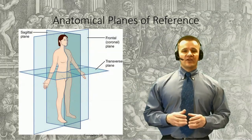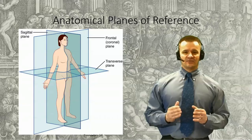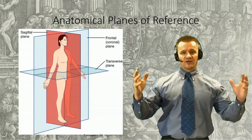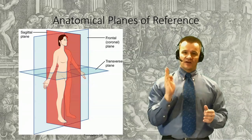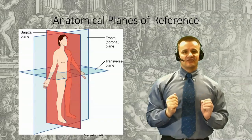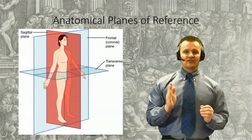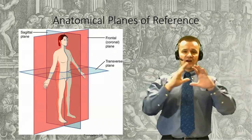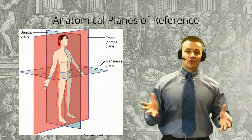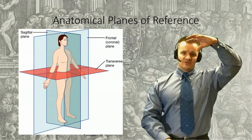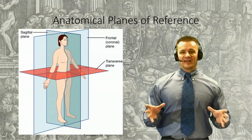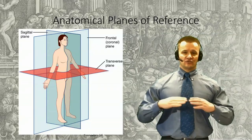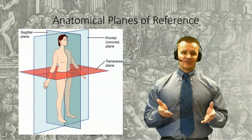Next, we review the planes of the body. We can think of these as imaginary flat surfaces that pass through the body in a specific orientation. We can subdivide them into one of four categories. Sagittal planes pass from anterior to posterior, dividing the body into left and right segments. When the sagittal plane is directly within the midline of the body, it's given the special name midsagittal or median plane. A frontal or coronal plane passes vertically from left to right, dividing the body into anterior and posterior segments. A transverse or horizontal plane passes horizontally through the body, dividing it into top and bottom segments. Radiologists will commonly use the term transaxial or simply axial to describe this plane. Oblique planes would cover any plane that doesn't fall into any of these other three categories.